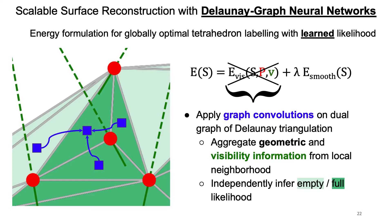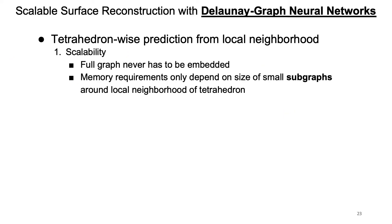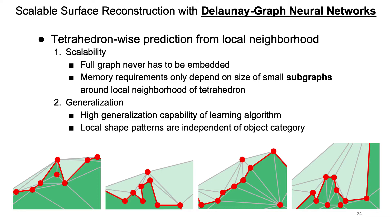This tetrahedron-wise prediction is a very important step because it helps achieve our two main goals. The first is scalability: by doing the empty-full prediction per tetrahedron we never have to embed the full graph of an object or scene, and the memory requirements only depend on the size of a small subgraph around the local neighborhood of a tetrahedron. Second, local predictions help achieve high generalization, because we only look at local shape patterns which are usually independent of the object category.